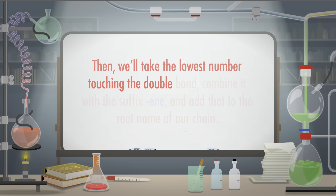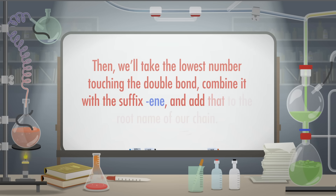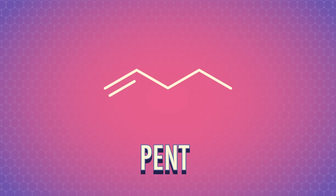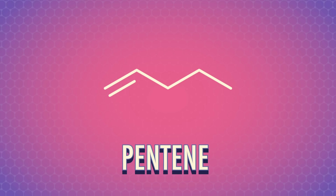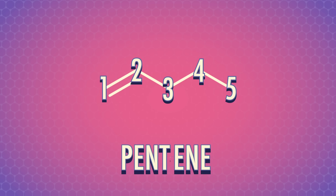Since IUPAC rules are all about communication, we want to let people know where that double bond is on the chain. So we'll number the carbons starting on the end closest to the double bond. For the sake of consistency, we want to keep the numbers as low as possible. Then we'll take the lowest number touching the double bond, combine it with the suffix "-ene", and add that to the root name of our chain. For example, the longest chain in this molecule is a 5-carbon chain, so the root is pent. Because there's a double bond, the suffix is "-ene". Starting from the end closest to the double bond: 1, 2, 3, 4, 5. And because the double bond is between carbons 1 and 2, this compound is pent-1-ene. Notice the punctuation — we stick dashes around the number.